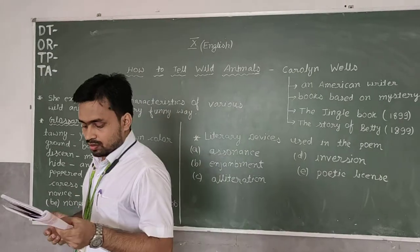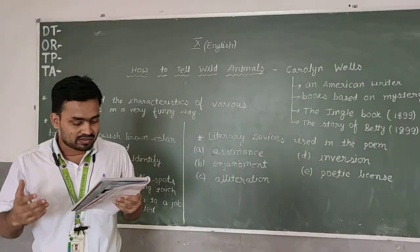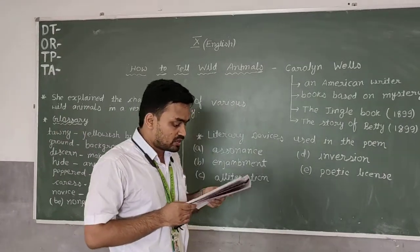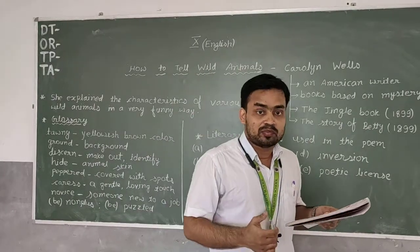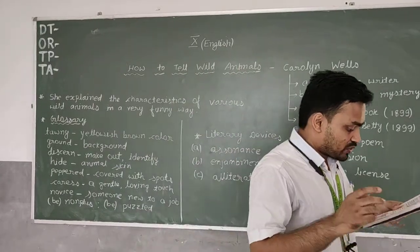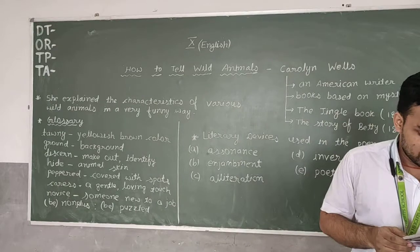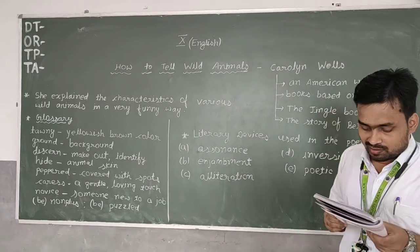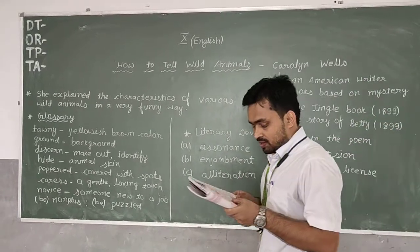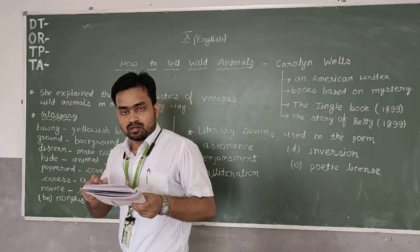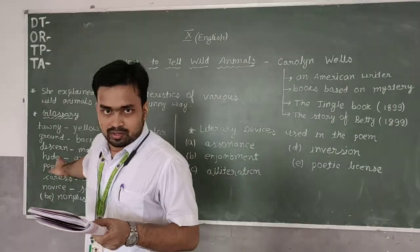Talking about the second stanza: Or if some time when roaming round, a noble wild beast greets you, with black stripes on a yellow ground, just notice if he eats you. This simple rule may help you learn the Bengal tiger to discern. Discern, identify, recognize.